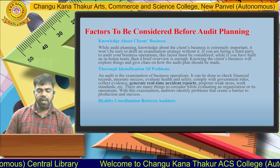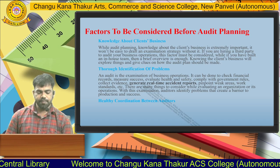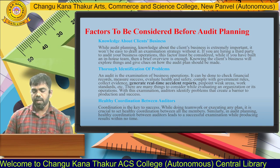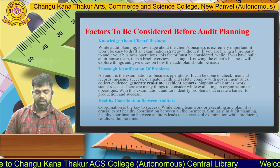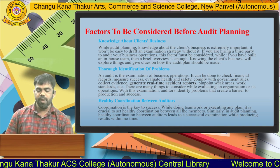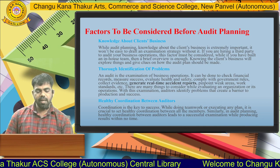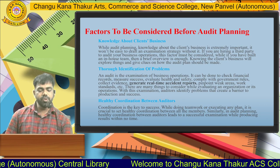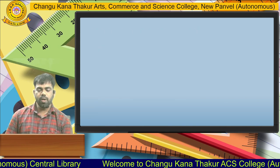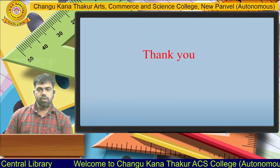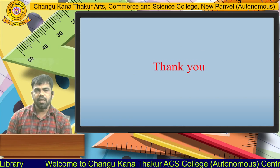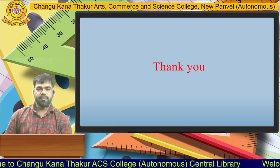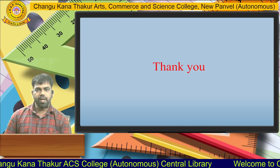The seventh factor is healthy coordination between auditors. Coordination is the key to success while doing teamwork or executing any plan. It is crucial to establish healthy coordination among all members. In audit planning, healthy coordination between auditors leads to a successful examination while producing results efficiently. That covers all the factors to be considered before starting audit planning. Thank you.